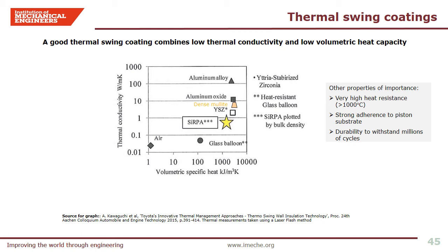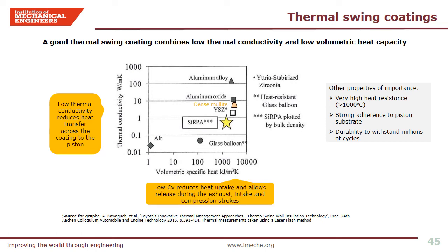A good thermal swing coating combines low thermal conductivity and low volumetric heat capacity. On the graph, the y-axis shows thermal conductivity λ in watts per metre per Kelvin — low λ reduces heat transfer across the coating thickness to the piston. On the x-axis is volumetric heat capacity CV in kilojoules per metre cubed per Kelvin — low CV reduces heat uptake and allows release during the exhaust, intake and compression strokes. Air has one of the lowest λ and CV values, while mullite and aluminum silicate groups have relatively low thermal conductivity and low CV. The aim of this research is to create a ceramic coating by leveraging the PEO process to produce a mullite aluminum silicate structure with high volume fraction of closed pores and resistance to very high heat and thermal cycles. One commercial coating claimed to have such characteristics is known as SAPORR — Silicon-reinforced porous anodized coating — developed by Toyota.